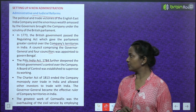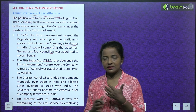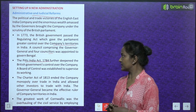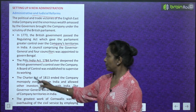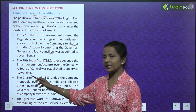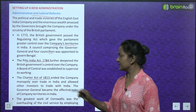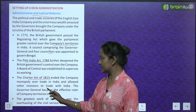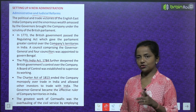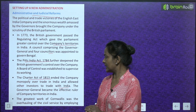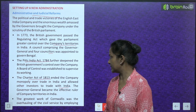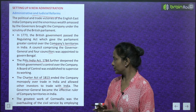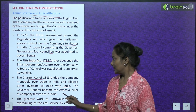A council comprising the Governor General and four councillors was appointed to govern Bengal. The Pitt's India Act 1784 further deepened the British government's control over the company. A Board of Control was established to supervise its working. The Charter Act of 1813 ended the company's monopoly over trade in India and allowed other investors to trade with India.